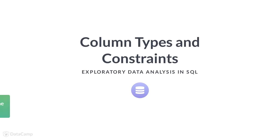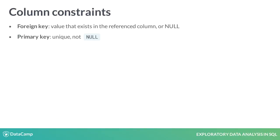Now it's time to turn to the contents of individual columns, the data types, and the constraints on what values can exist in each column. Foreign keys and primary keys are two types of constraints that limit the values in a column, but columns can also be constrained in other ways.